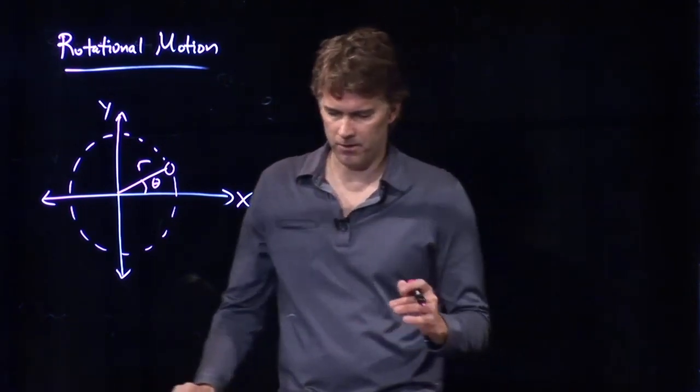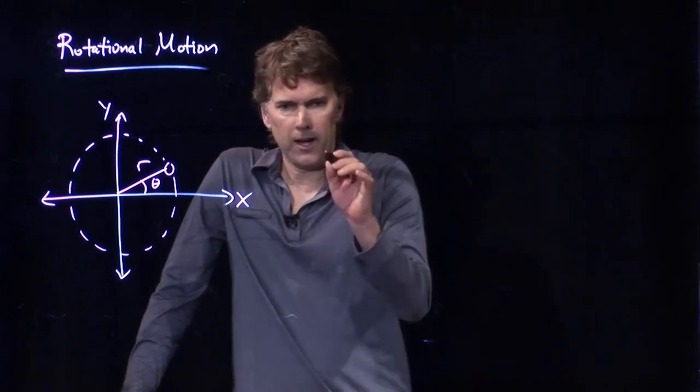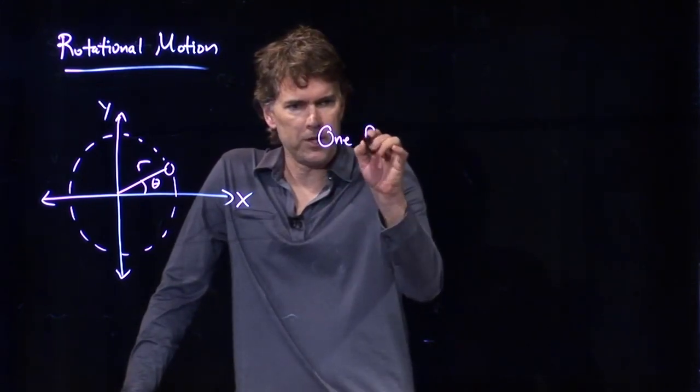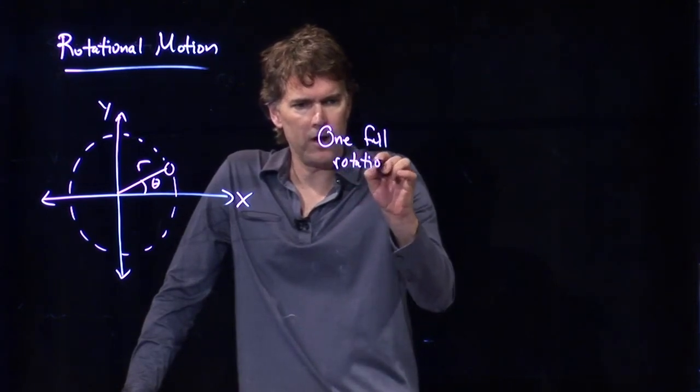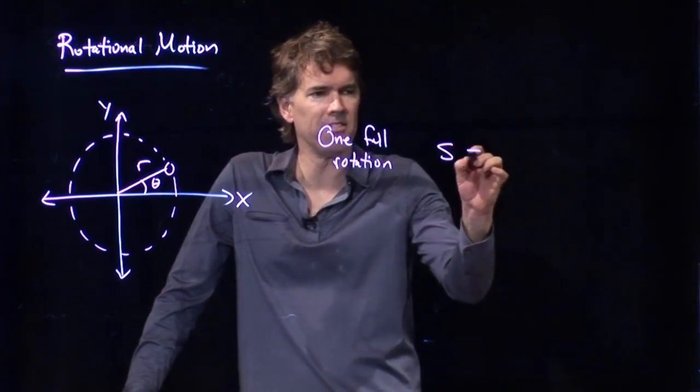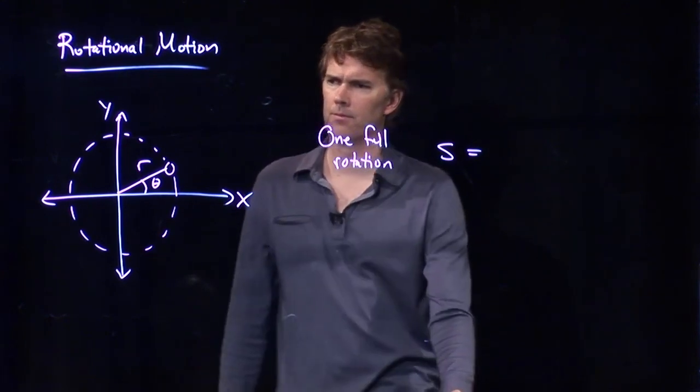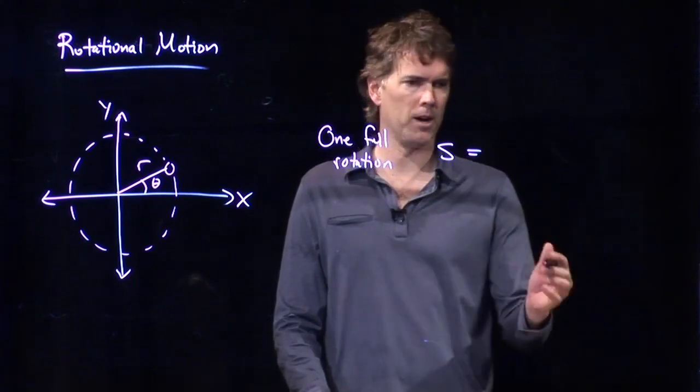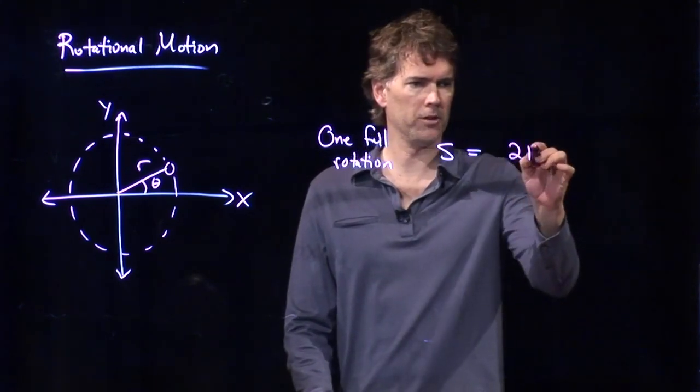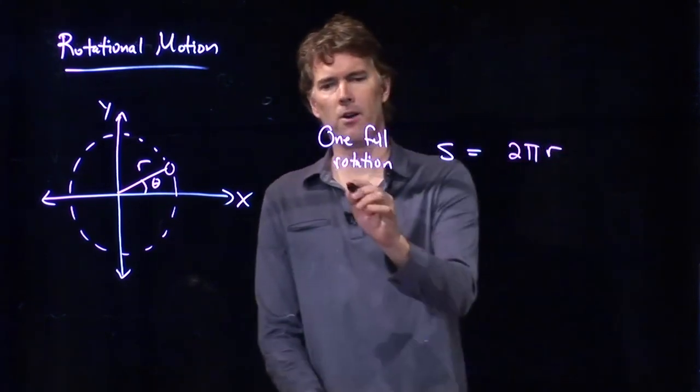Okay, so what are some of the characteristics of this? Well, if I go one full rotation, how far have I gone in distance? Anybody remember the circumference of a circle? 2 pi r. That's right. Circumference of a circle is 2 pi r.